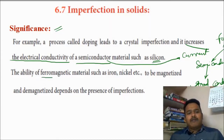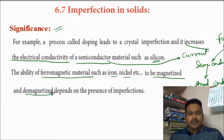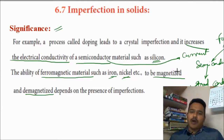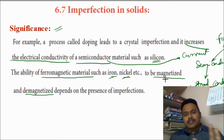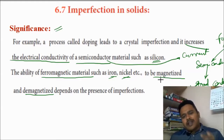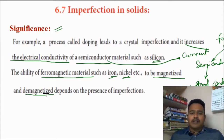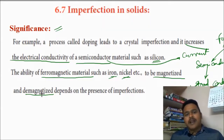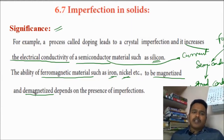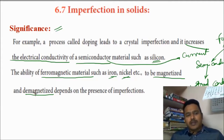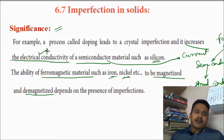The other example is the ability of ferromagnetic materials such as iron and nickel to be magnetized and demagnetized. You can add the magnetic property by arranging atoms in a crystal. In a similar way, you can make it demagnetized by arranging the atoms in that particular crystal by creating some imperfections, or by adding some foreign species. When you are adding foreign species, automatically there is an irregular arrangement, and when the irregular arrangement is there there is a change in properties — increase in electrical conductivity, or demagnetization, or magnetization.